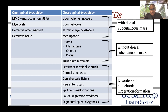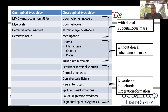I like to think about things really simply. When I think about a closed neural tube defect, I'm going to ask: is there a dorsal subcutaneous mass or is there not a dorsal subcutaneous mass? Those with a dorsal subcutaneous mass include a lipomyelomeningocele, a lipomyelocele, terminal myelocystocele, and a meningocele.